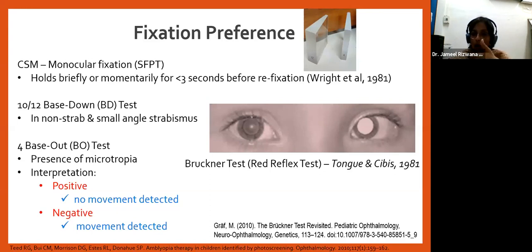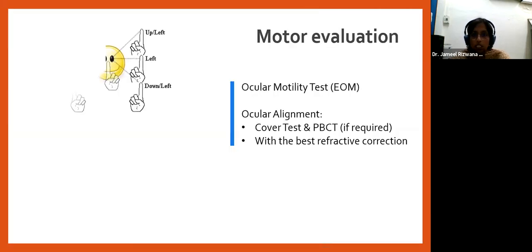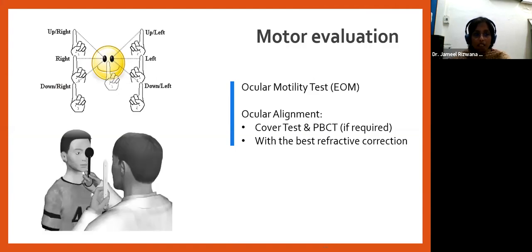Next is motor evaluation — getting ocular motility testing done and accurate estimation of ocular alignment. If strabismus is present, perform cover testing and neutralize the strabismic deviation with the best refractive correction in place.